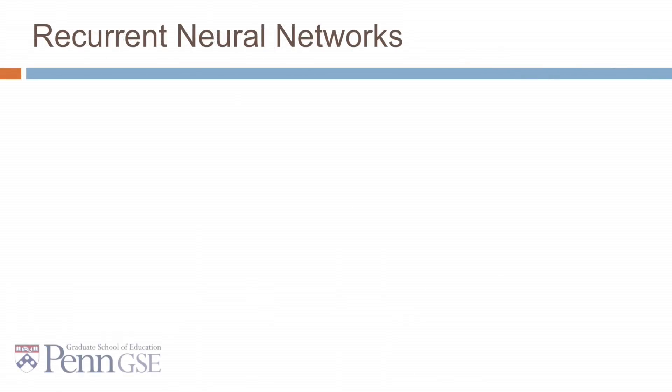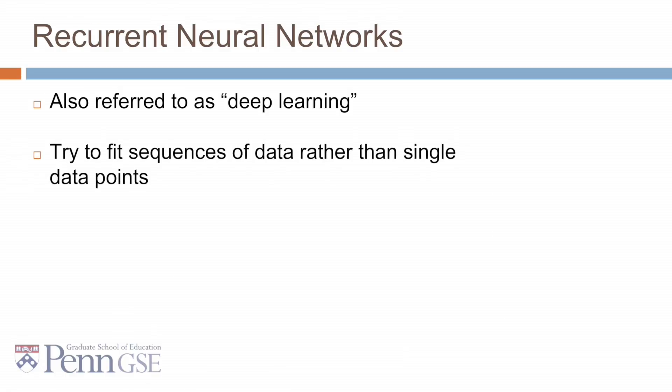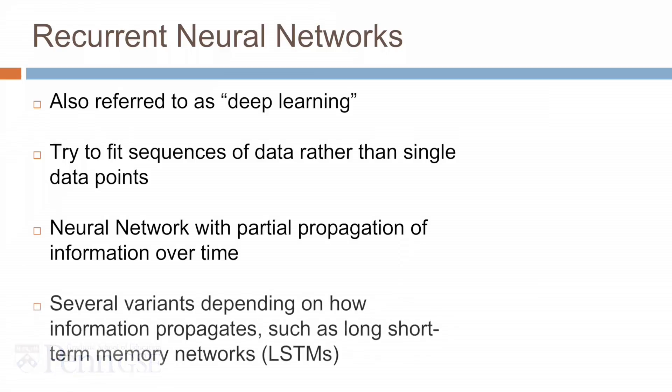A modern extension on neural networks is recurrent neural networks, also referred to as deep learning. Recurrent neural networks try to fit sequences of data rather than single data points. They're a neural network with partial propagation of information over time. And there are several variants of RNNs, depending on how the information propagates. Perhaps the most popular is long, short-term memory networks.